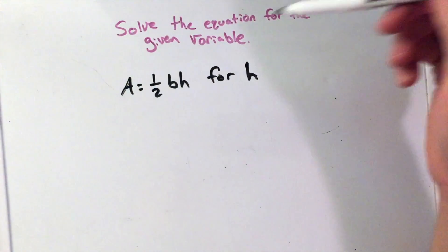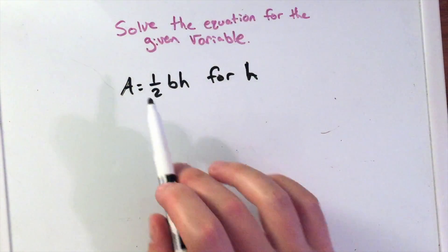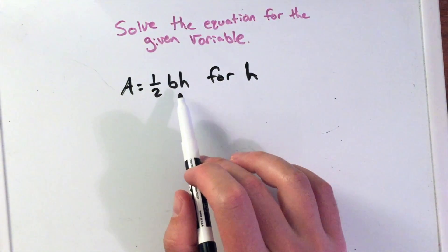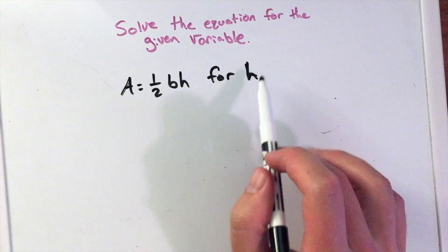So again, here we want to solve the equation for the given variable. Our equation is A equals 1/2 b times h. For h, we want to solve for h.